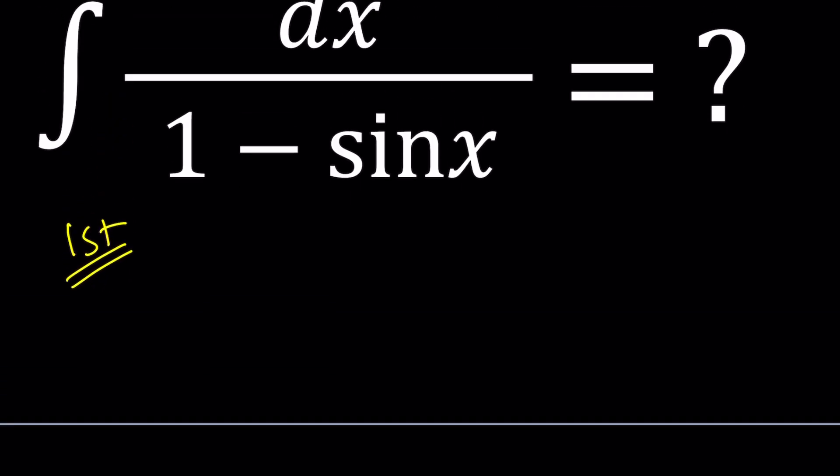So we have 1 over 1 minus sin x. We're going to go ahead and use a very special substitution for this. So let's go ahead and replace tangent x over 2 with z. It's a very special type of substitution. From here, because tangent x over 2 is equal to z, by using the double angle formula, we can safely say that tangent x equals 2z divided by 1 minus z squared. So basically, we replace z with tangent x over 2, and that's the double angle formula.